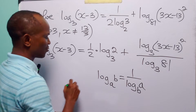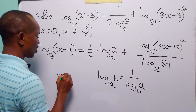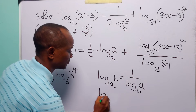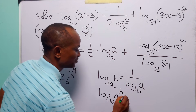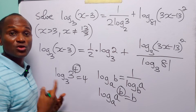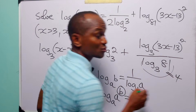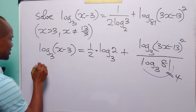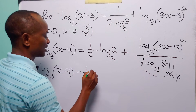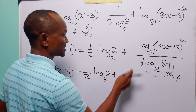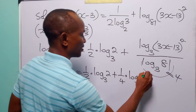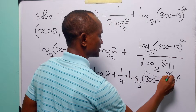Now let us look at this denominator. We have log base 3 of 81. But remember that 81 is 3 to the power 4, and log base a of a to the power b equals b. So, log base 3 of 3 to the power 4 is equal to 4, meaning this whole denominator equals 4. Now we can write this equation as log base 3 of x minus 3, equal to one-half times log base 3 of 2, plus one-quarter times log base 3 of 3x minus 13 squared.